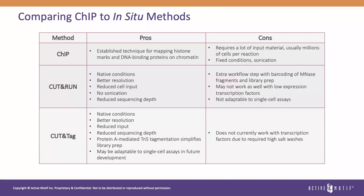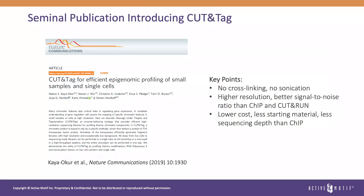Next, we're going to dive into the seminal publication that introduced Cut-and-Tag to the world. The Hennikoff lab first introduced Cut-and-Tag in 2019 with a publication in Nature Communications. The key takeaways from this paper are that Cut-and-Tag, unlike CHIP, does not require cross-linking or sonication. It has higher resolution than CHIP and Cut-and-Run, and provides this data at a lower cost with less starting material than CHIP.